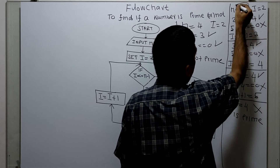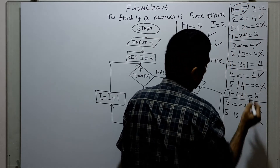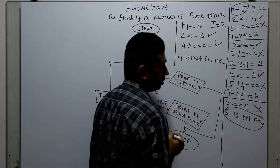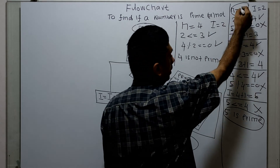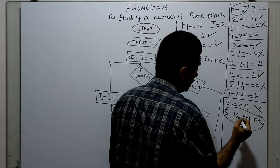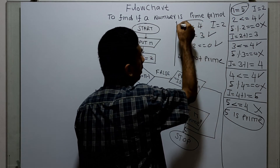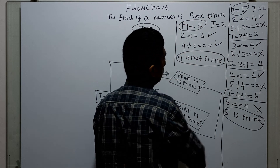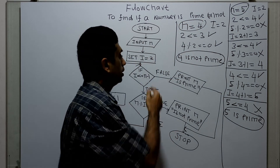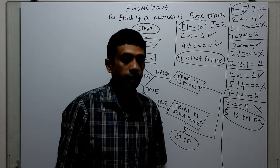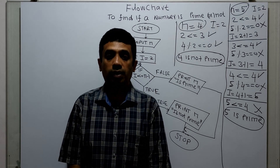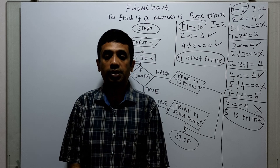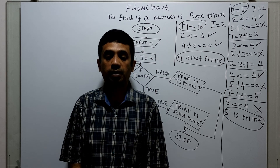For an input prime number, the flowchart prints correctly. Five is a prime number and it prints five is prime. Four is not a prime number and it prints four is not prime. The flowchart is working properly. Thanks for watching this video — please subscribe to my channel, share, comment, and press the bell button. Thank you.